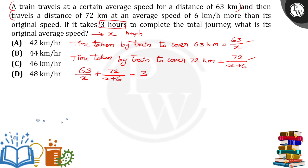By taking the LCM for the denominator, we get x² + 6x. The numerator will be 63(x+6) + 72x, which is 63x + 378 + 72x = 135x + 378 equals 3. Then 135x + 378 = 3(x² + 6x) = 3x² + 18x.